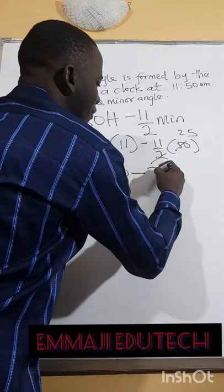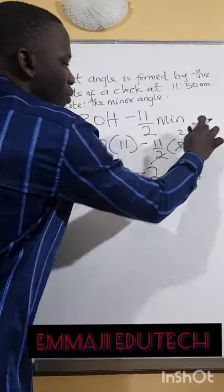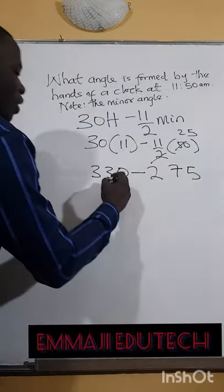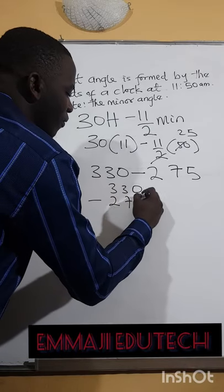Oh, a shortcut to this. We have 2, 5. 2 plus 5, we have 7. Now we have 330 minus 2, 7, 5.